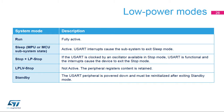The USART peripheral is fully active in run mode. The USART interrupts cause the device to exit sleep mode. The USART reception is functional in stop and low-power stop modes and generates a wake-up interrupt on start, address match, or received frame event. It is not active in low-power low-voltage stop mode. In standby mode, the peripheral is in power down and it must be reinitialized after exiting standby mode.